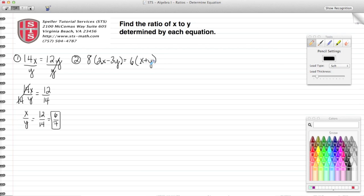And I'm going to set that equal to 6 times the quantity x plus y. Our goal is still the same. I need to get the ratio of x to y to one side of the equal sign and everything else to the other side.